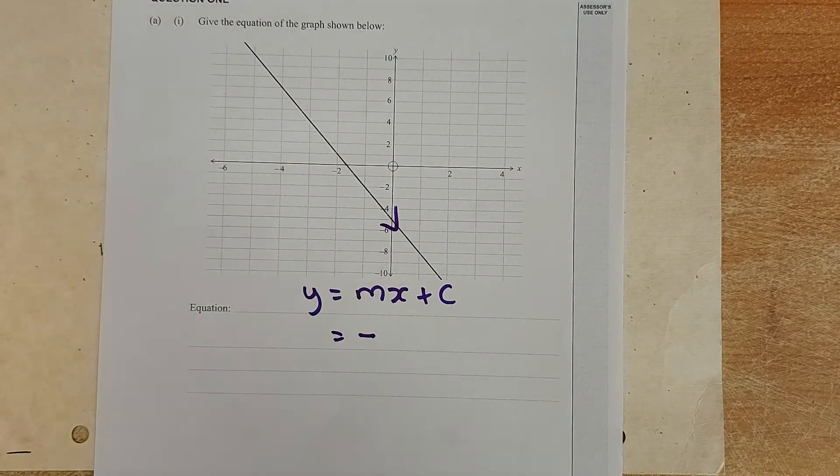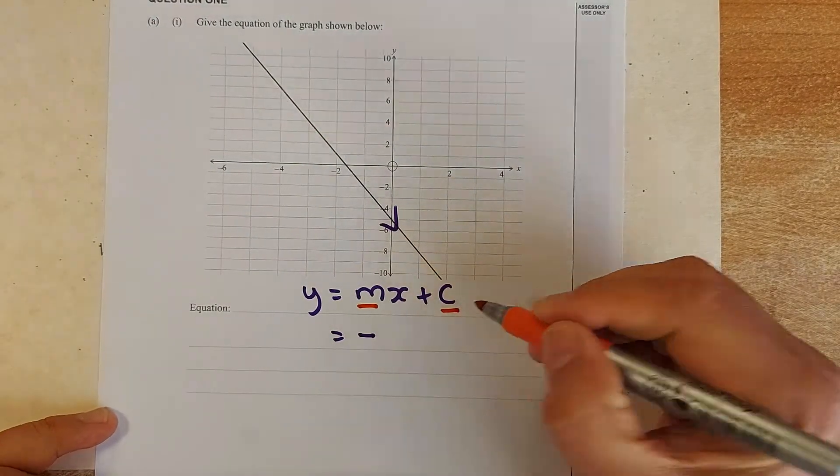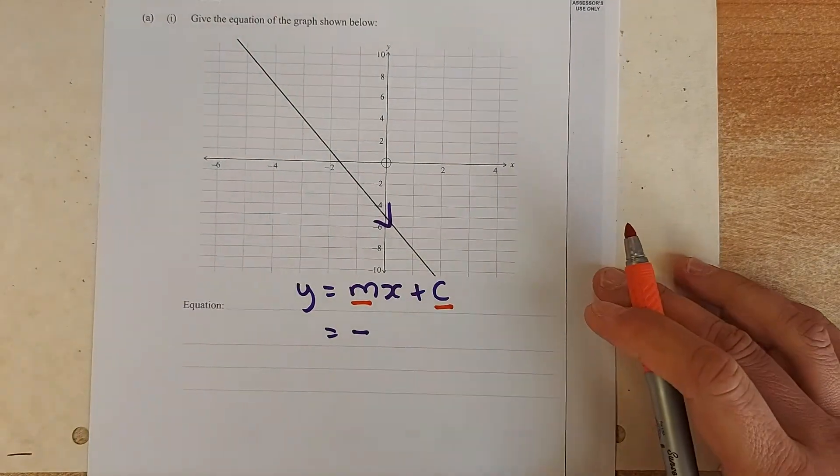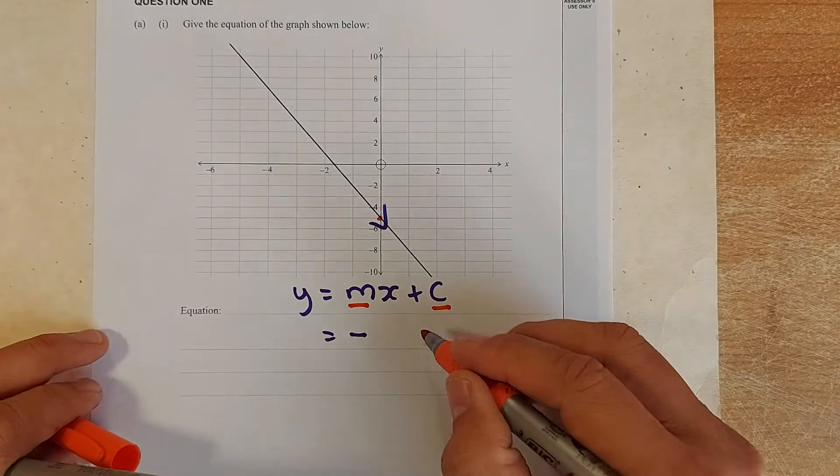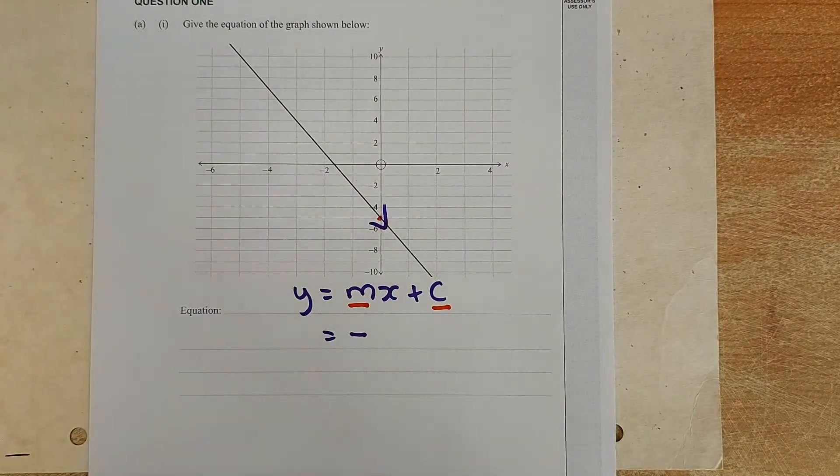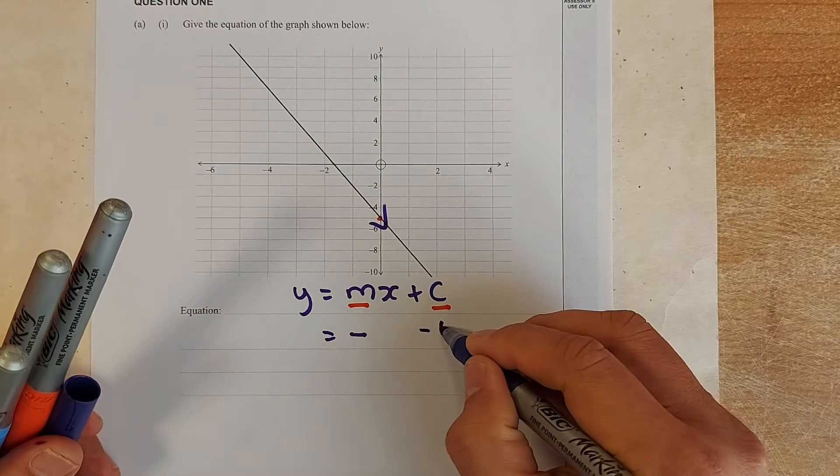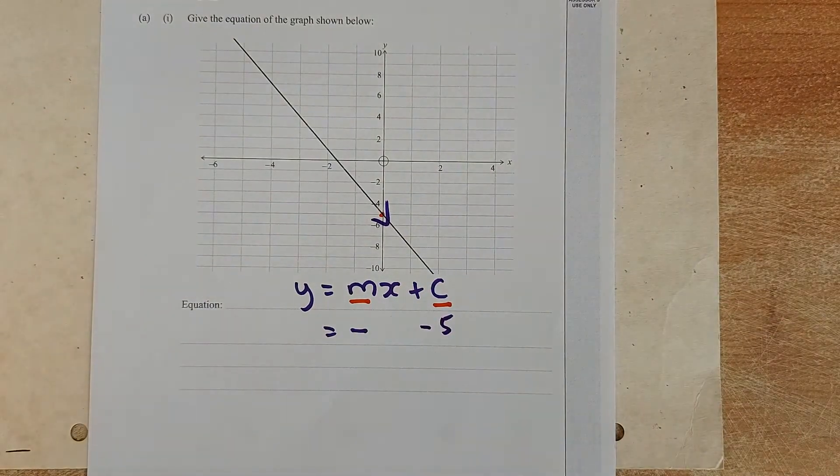So your next job is to find m and c. C is a lot easier. So c, the graph is going to cut at negative 5, so c is going to be negative 5. So that is found. So you have found 2 of the 3 variables. And the next thing you need to find is the gradient.